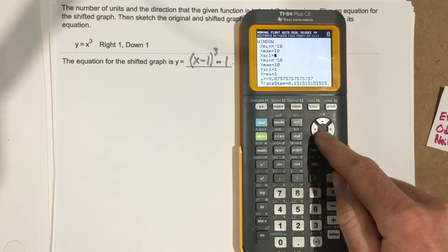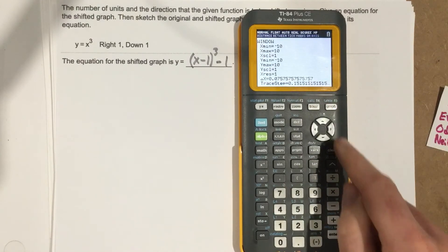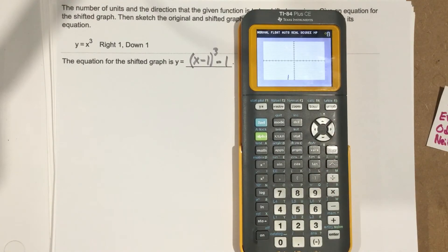I'll make sure the window is set correctly: -10 to 10, scale 1 for both x and y. Let's graph the two functions.